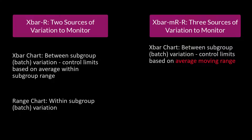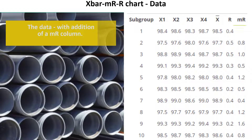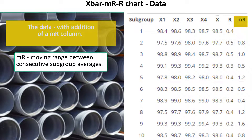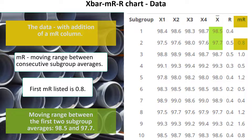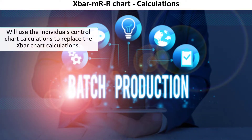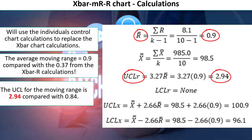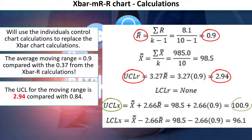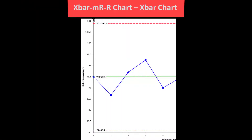With the classical X-bar and R chart, we had two sources of variation to monitor: between subgroup variation and within subgroup variation. Now we're going to monitor three sources. We're going to take the X-bar chart and treat it as an individuals chart — so the control limits will be based on the average moving range. We'll also have a moving range chart monitoring between subgroup variation, and we'll keep the within subgroup range chart. The moving range is the range between consecutive subgroup averages — for example, the first moving range is 0.8, the difference between subgroup averages 98.5 and 97.7.